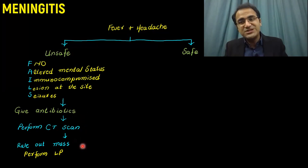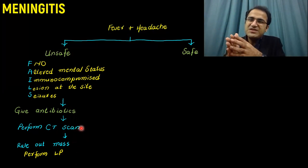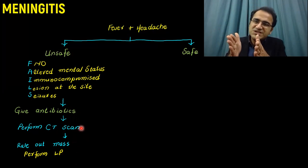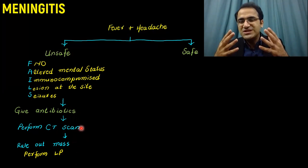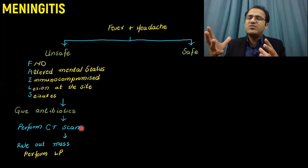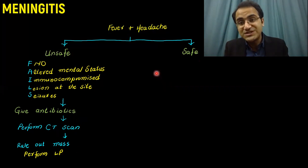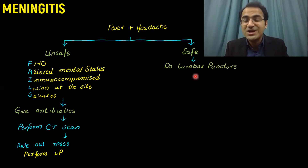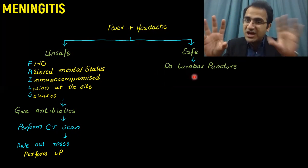Giving antibiotics before lumbar puncture can affect cultures, but since there is a delay while waiting for CT scan, we must give antibiotics beforehand. In patients who are safe for lumbar puncture, proceed directly to LP and send for cell count and cultures. Cell count results return earlier; cultures take longer.